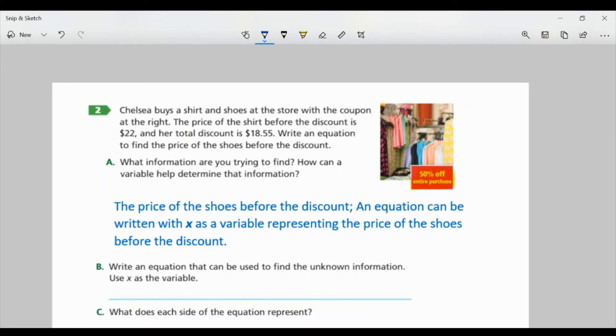The other information that we know, well, I know the shirt is $22. The shoes, we don't know. And the discount was $18.55. Okay. So let's look at part A. What information are you trying to find? And how can a variable help determine that information?